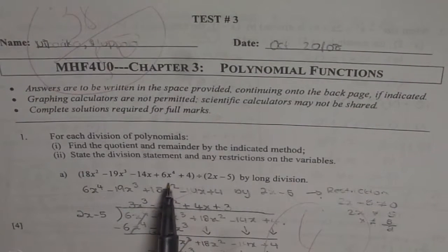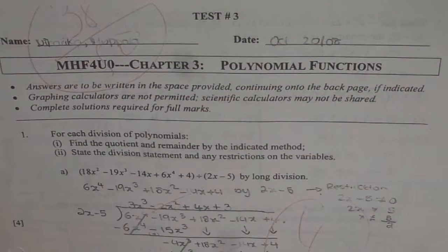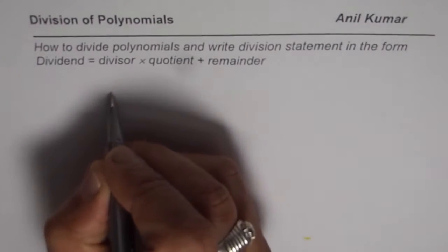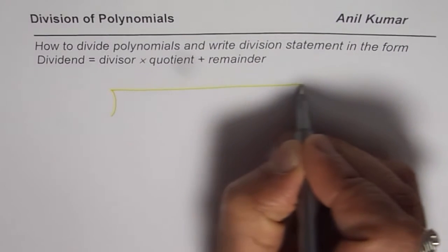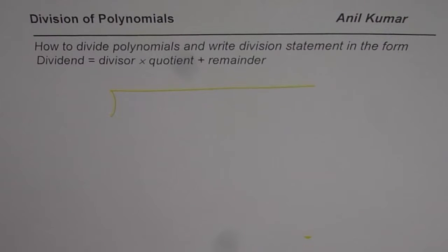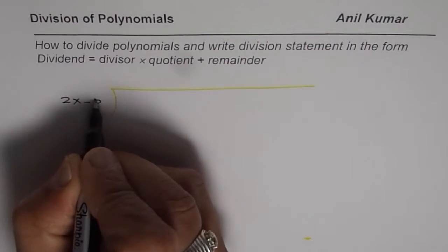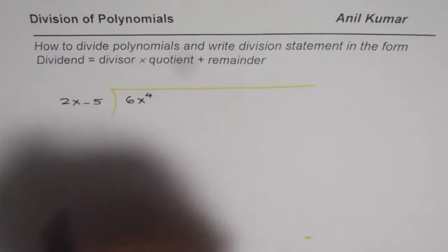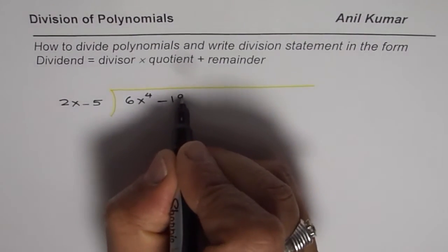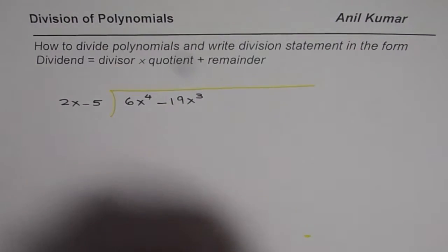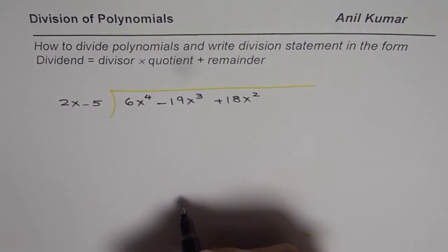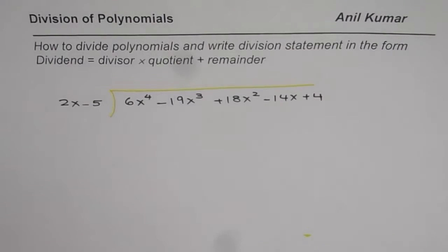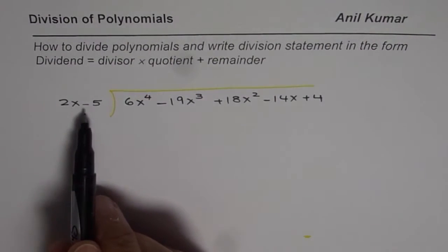Let me rewrite this equation in the correct way, and then show you how to divide and write it in the form of a division statement. The divisor is 2x minus 5. The dividend, rewritten in standard form starting with the highest degree, is: 6x to the power of 4, minus 19x cubed, plus 18x squared, minus 14x, plus 4.